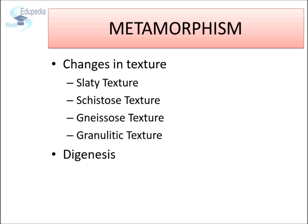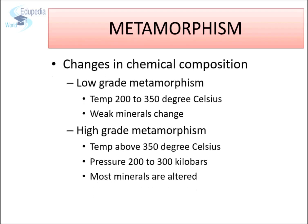Diagenesis: if the mineral composition of the rock does not change but only the original structures are altered, the rock is said to have undergone a process of diagenesis. Changes in chemical composition: the formation of new minerals is an essential condition for metamorphism. The assemblage of minerals found in metamorphic rocks is an important indicator of the grade of metamorphism that a rock has suffered, and the following is a brief guideline of minerals associated with different grades of metamorphism.